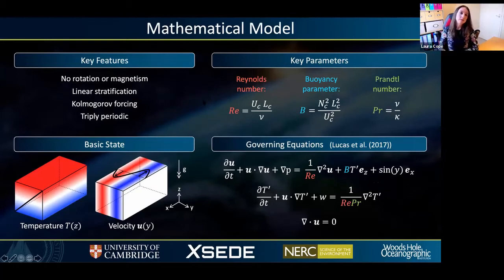To answer this question we're going to consider the simplest possible model. We're going to neglect the effects of rotation and magnetism, and we're going to consider a background state with a linearly varying stratification imposed on the temperature profile. We're going to continuously apply a sinusoidal horizontal body force to generate horizontal shear. For simplicity we'll also impose triply periodic boundary conditions. Just to clarify, in the context of the temperature fields, this periodicity is applied to the perturbations away from the background state.